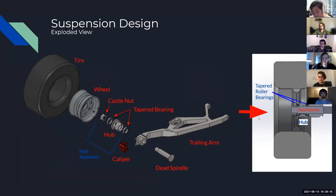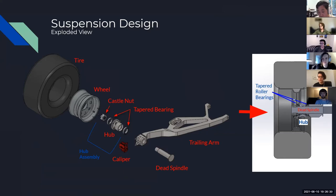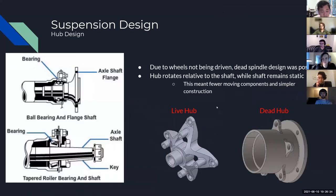The hub rotates relative to the dead spindle, and the hub is bolted to the wheel. The reason this is called the dead spindle is because it does not rotate — the wheel rotates relative to the spindle. This is called the dead spindle design.